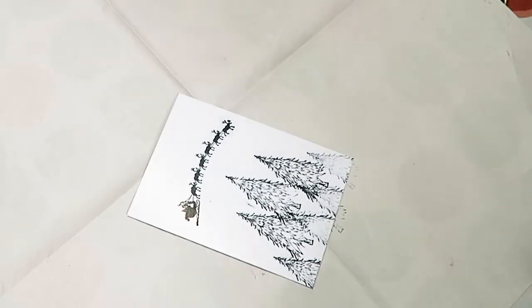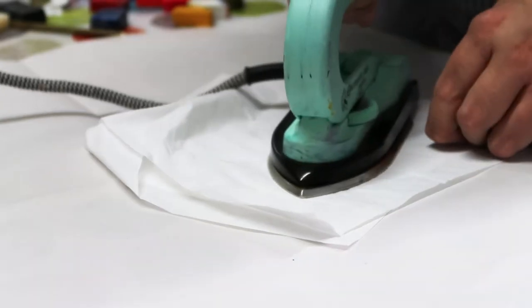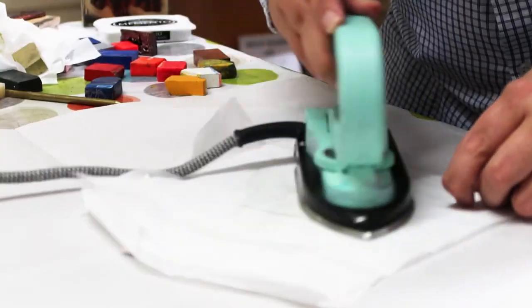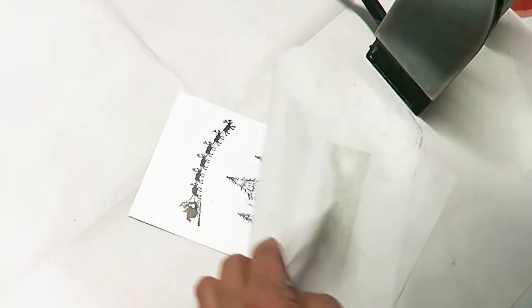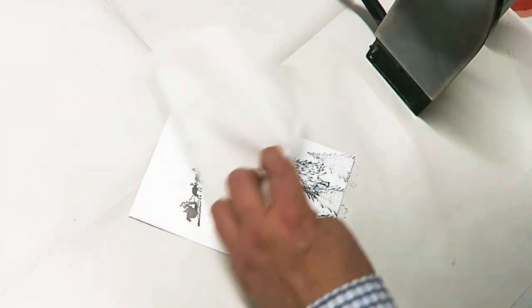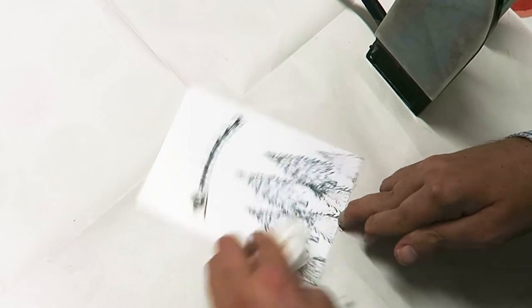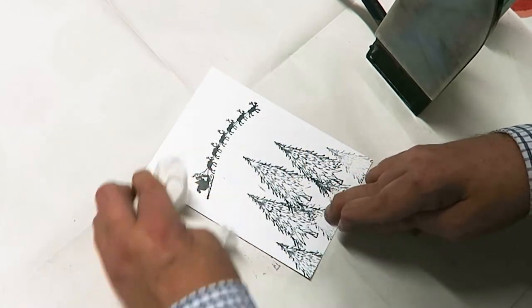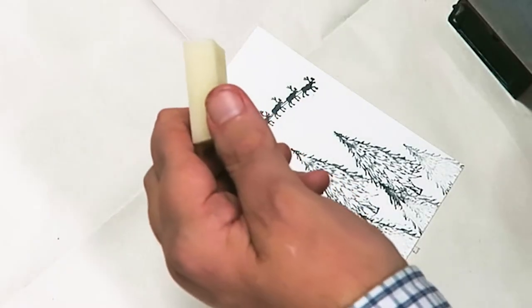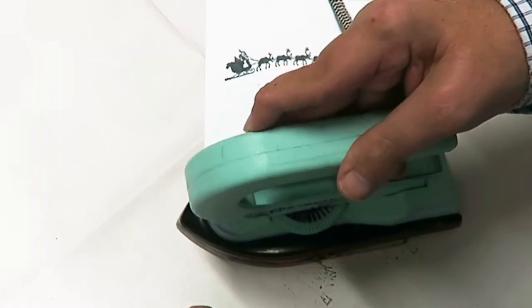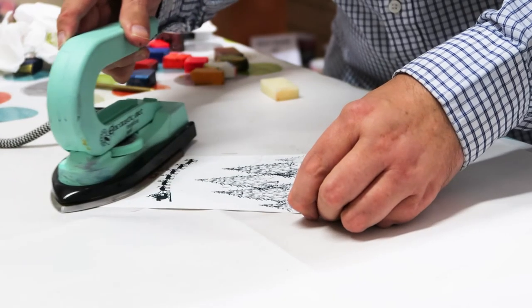Take clean tissue, lay it over the top, give it an iron over. This time don't forget we're going over the whole card, near enough. Check that they're dry. If they weren't, they'd smudge all over. Take some clear 27, clear wax, just apply a thin layer all over the card.